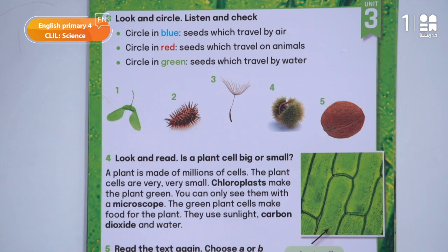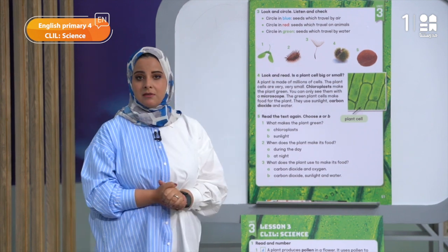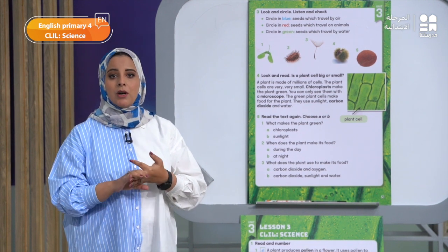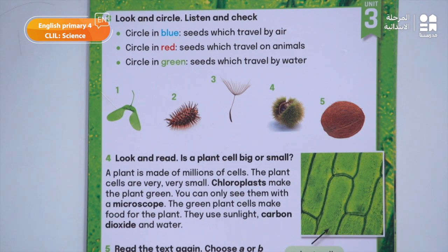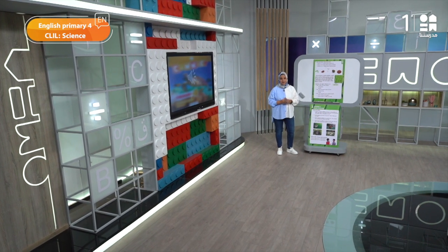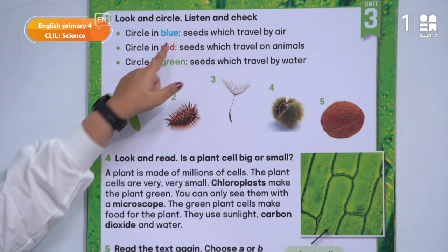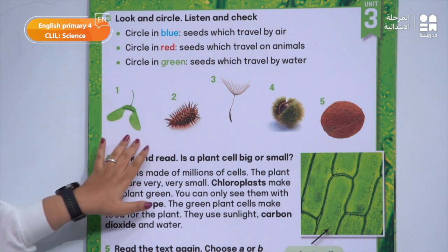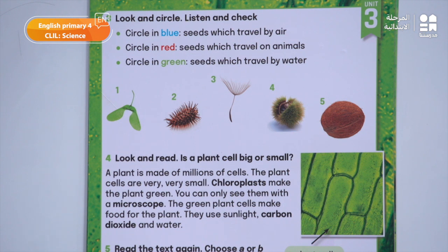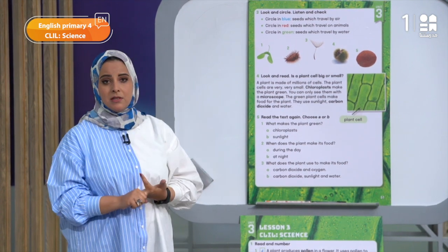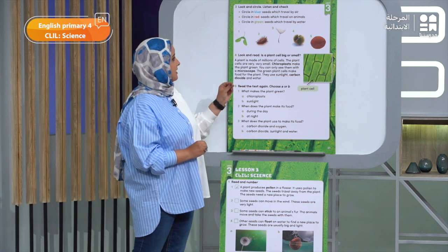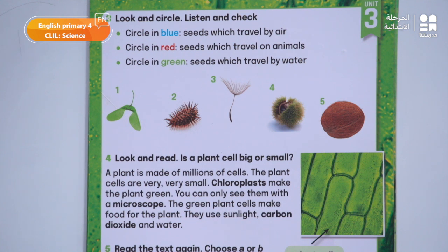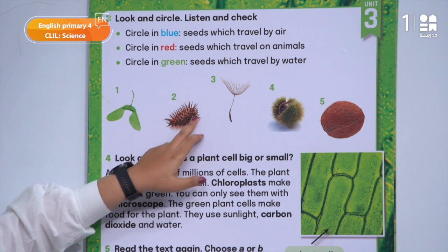Let's look at number 1. Do you think it travels by air, on animals, or by water? Very good — it's so light, so number 1 travels by air. Which color? The blue color, so circle number 1 in blue. Number 2 — what do you think? Does it travel by air, on animals, or by water? Very good, number 2 travels on animals. Which color? The red color, so circle number 2 in red.